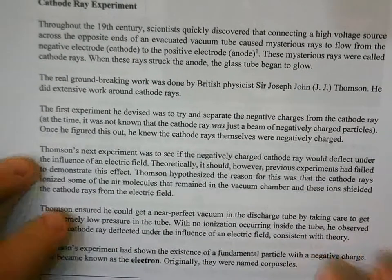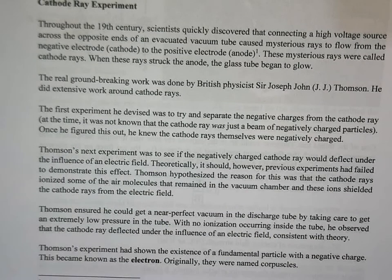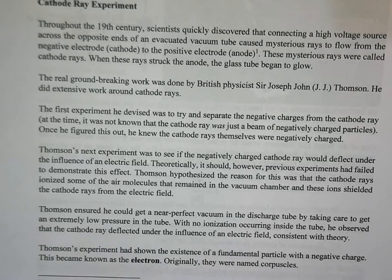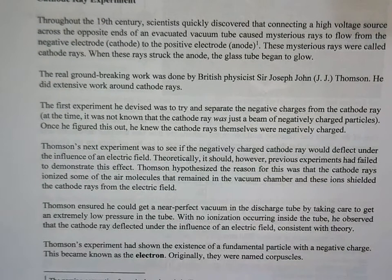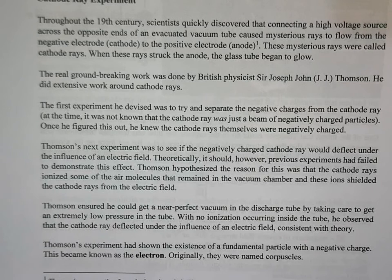The first part deals with the cathode ray experiment done by JJ Thomson from the UK. He devised an experiment with an evacuated vacuum tube, hooked up parallel plates on both ends, and applied a potential difference across them. He noticed a mysterious ray flowing between the two plates — cathode rays. Thomson wanted to separate the negative charges from the beam, and eventually determined that cathode rays were just negatively charged particles.